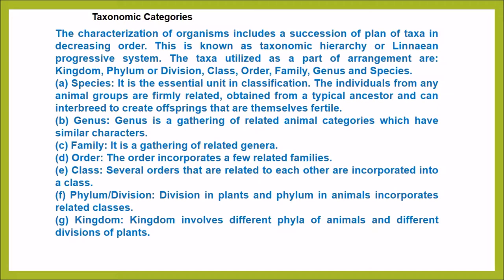The individuals from any species are closely related, obtained from a common ancestor, and can interbreed to create offspring that are themselves fertile. Genus is a gathering of related species which have similar characteristics. Family is a gathering of related genera. Order incorporates a few related families. Class — several orders that are related to each other are incorporated into a class. Phylum or Division — division in plants, phylum in animals, incorporates related classes. Kingdom involves different phyla of animals and different divisions of plants.